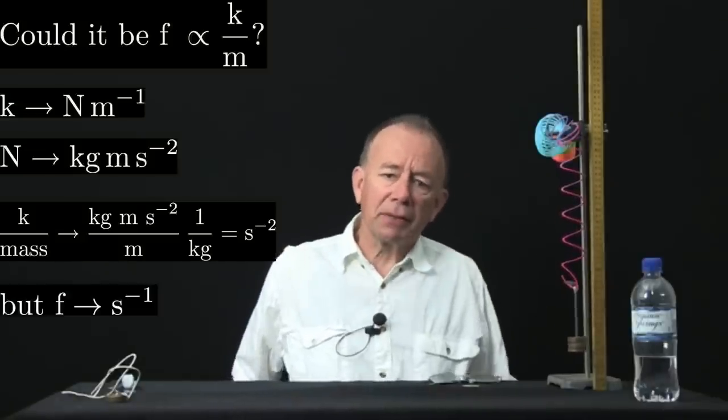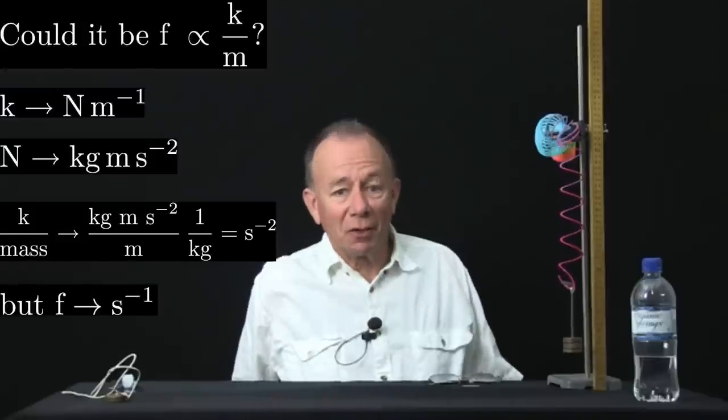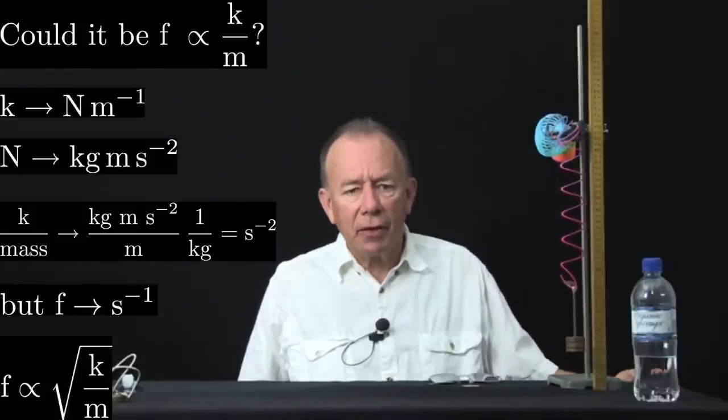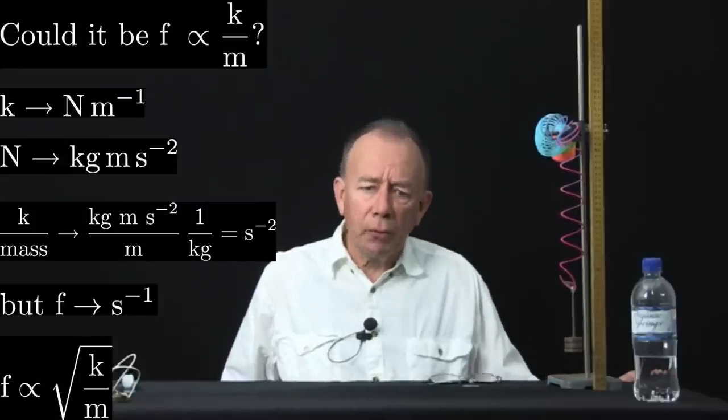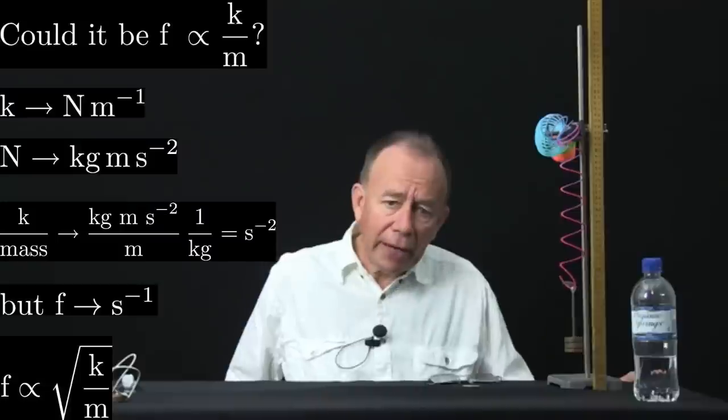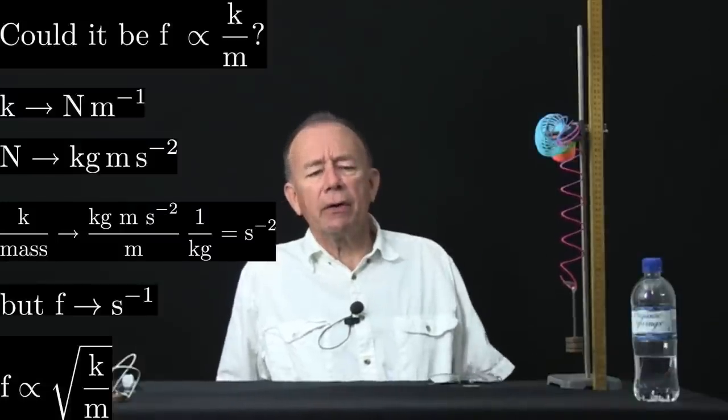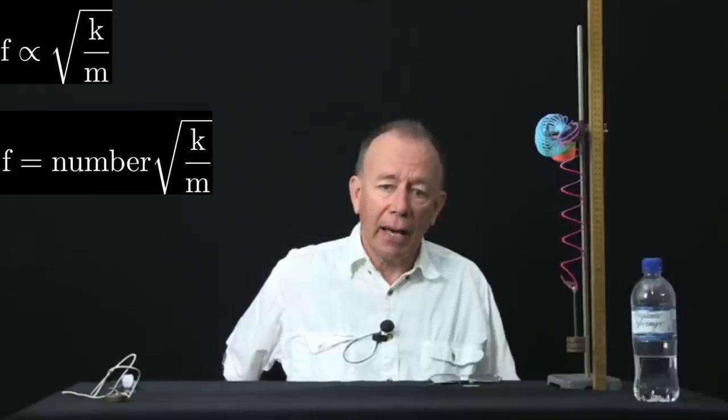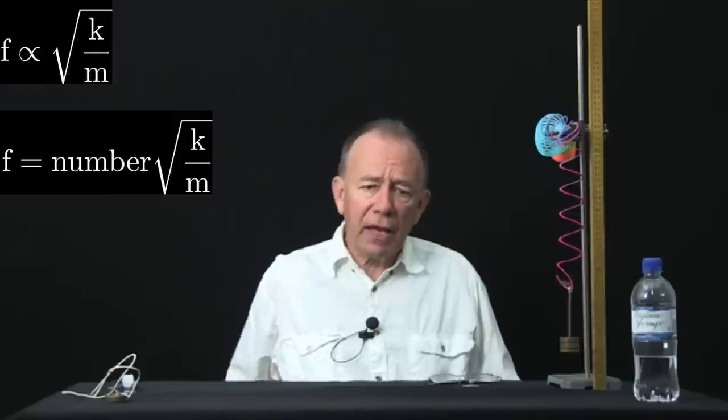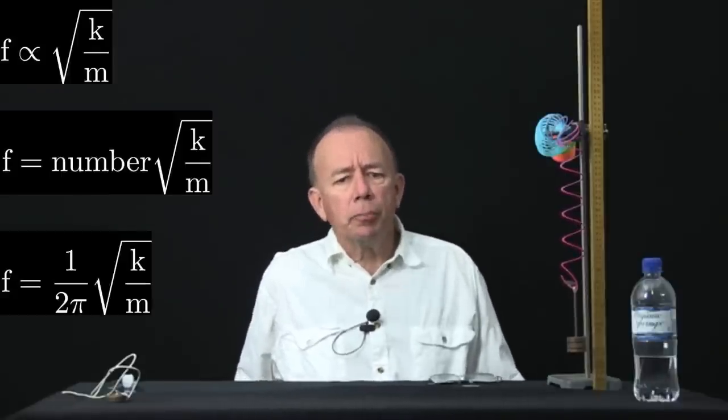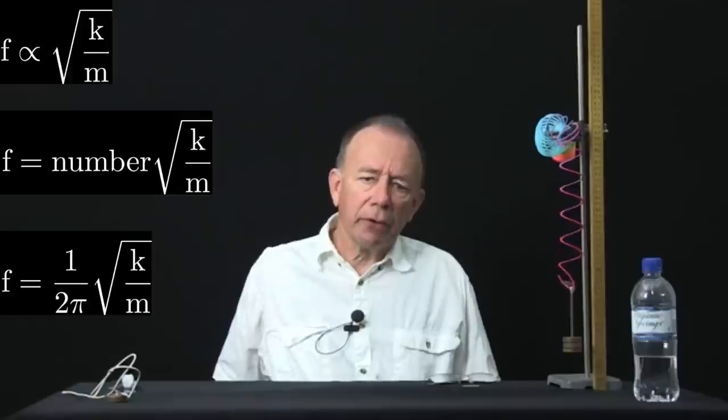Now, frequency has to be in seconds to the minus 1, cycles per second, so we would guess that the frequency is proportional to the square root of k over m. That guess is correct. The only thing is, we can't necessarily, from that argument, write f equals k over m. There could be a dimensionless number, a pure number, out in front of the square root. And in fact, there is. In fact, the frequency is 1 over 2π times the square root of k on m.